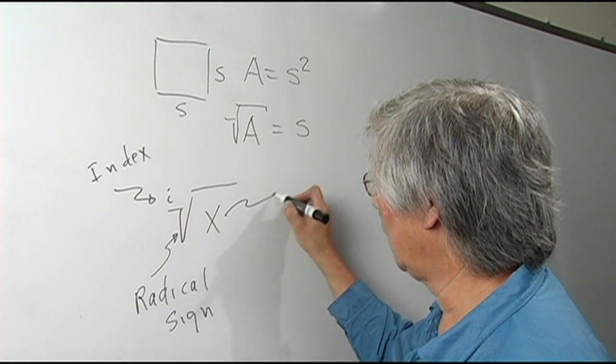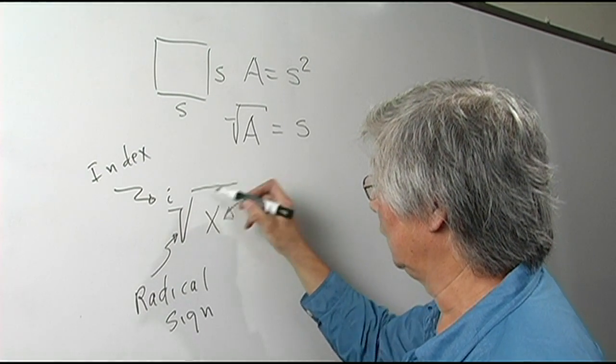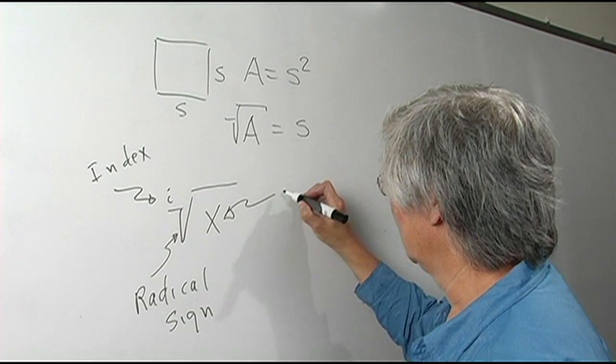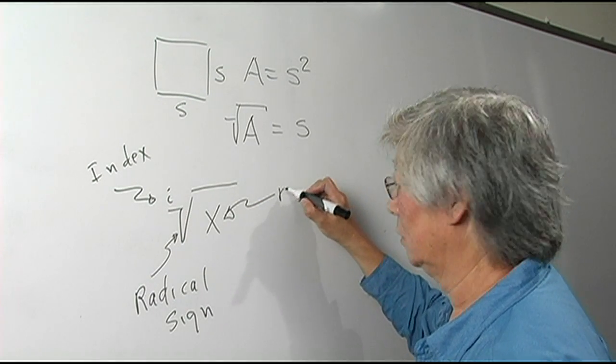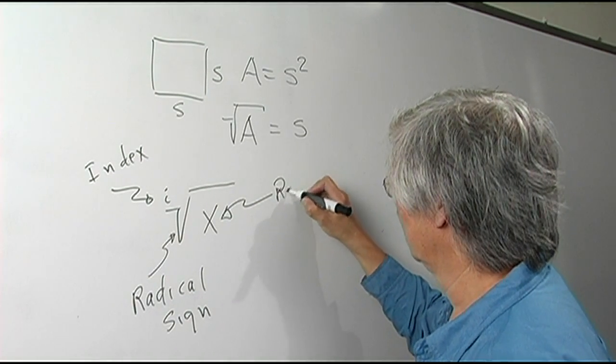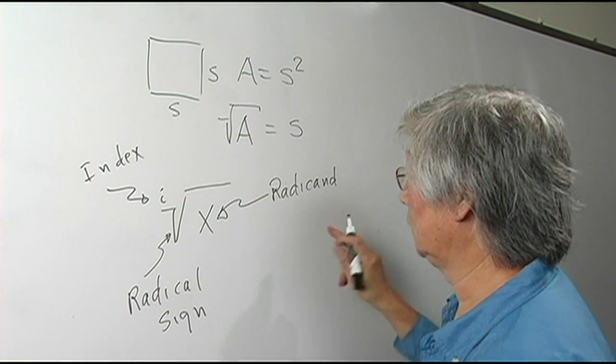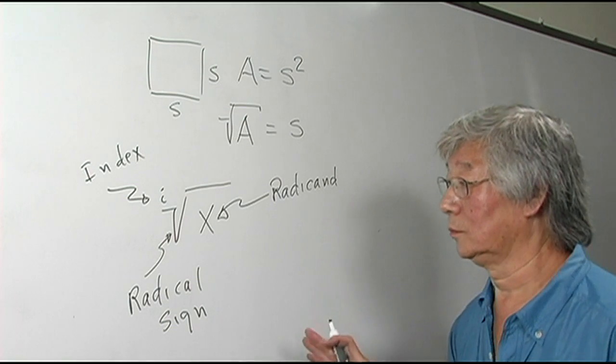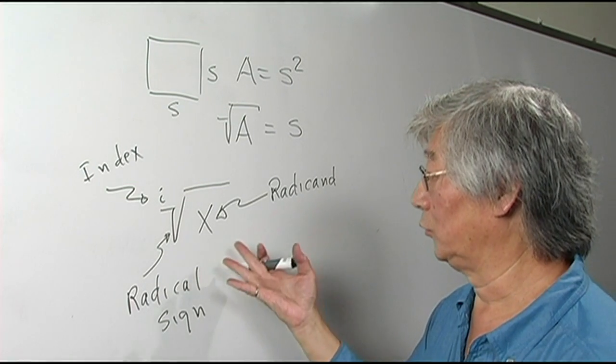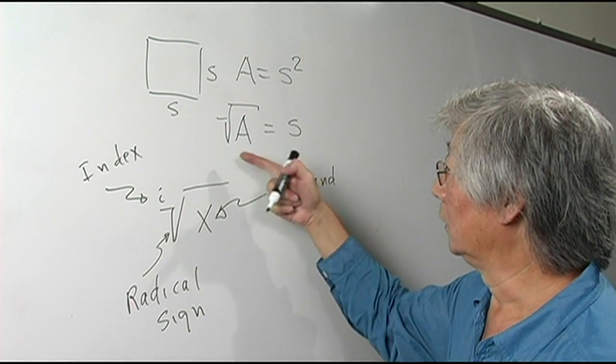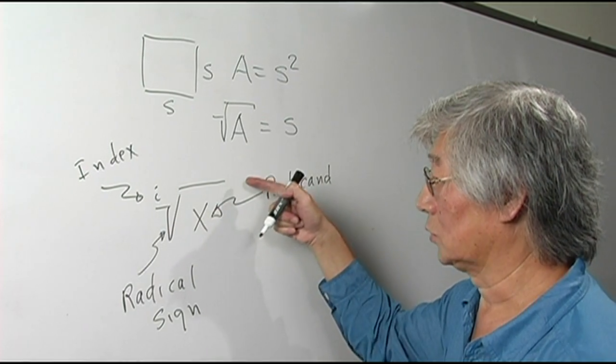And what is under the radical or inside this sign is called the radicand. So these are a bunch of names that people refer to in terms of the radical sign.